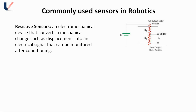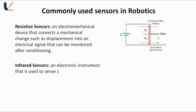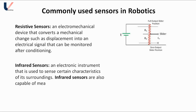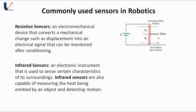The next sensor is the infrared sensor. An infrared sensor is an electronic instrument used to sense certain characteristics of its surroundings. Infrared sensors are also capable of measuring the heat emitted by an object and detecting motion.